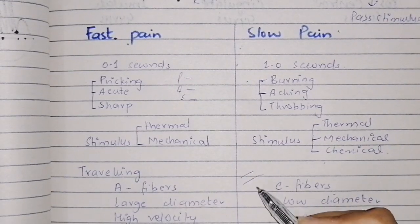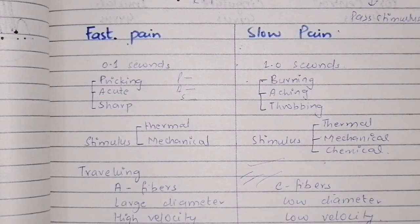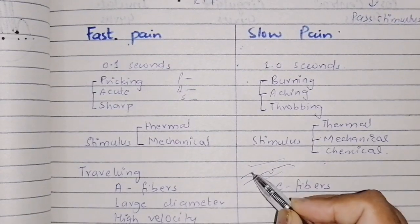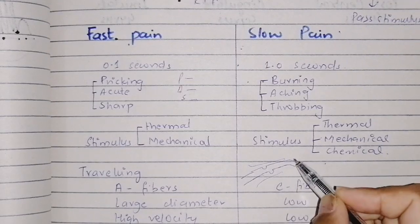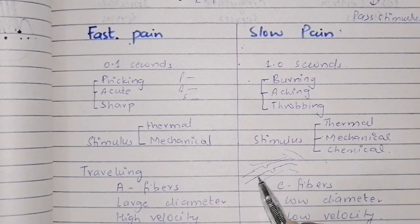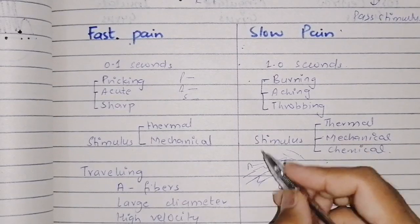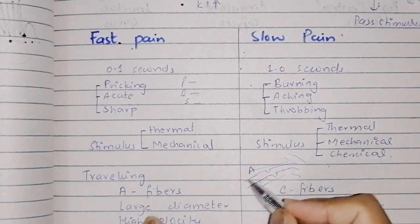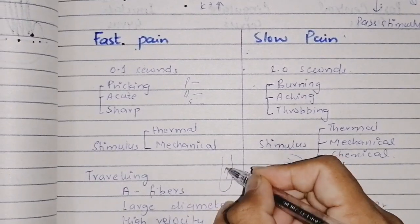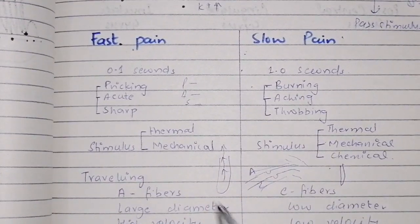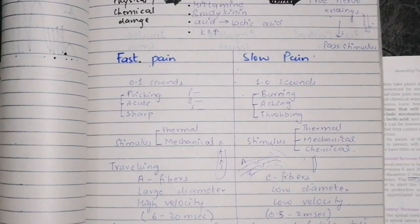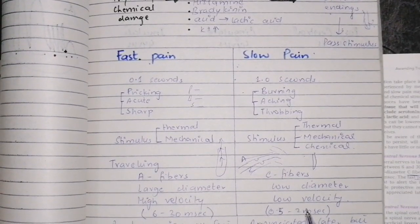Both A and C fibers enter the dorsal horn of the spinal cord and synapse in the posterior grey matter. The A-delta fibers carry fast pain and the C fibers carry slow pain. The diameter of C fibers is smaller than A-delta fibers, which is why the conduction velocity of C fibers is much lower — about 0.5 to 2 meters per second — whereas A-delta fibers conduct at 6 to 30 meters per second.